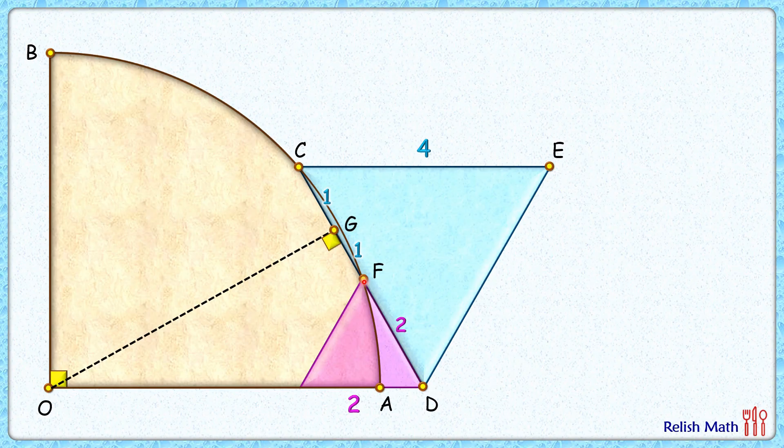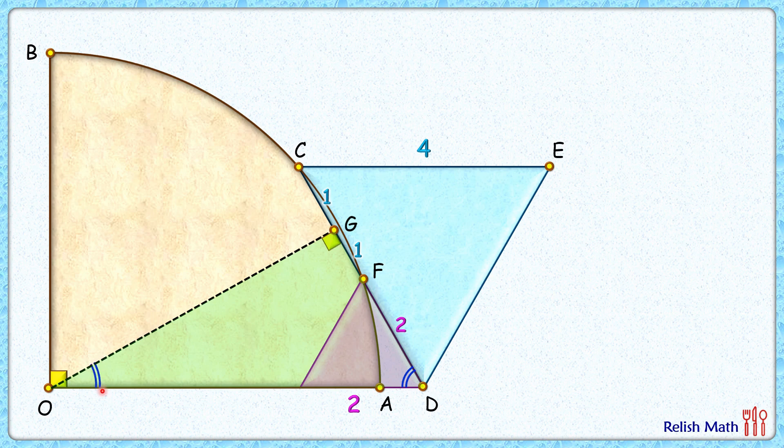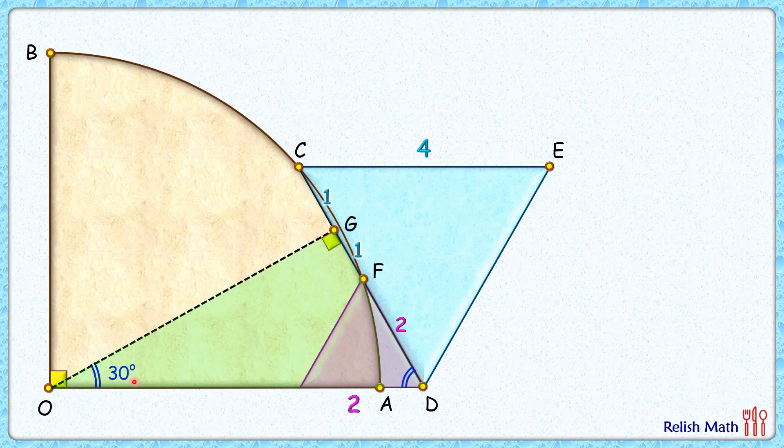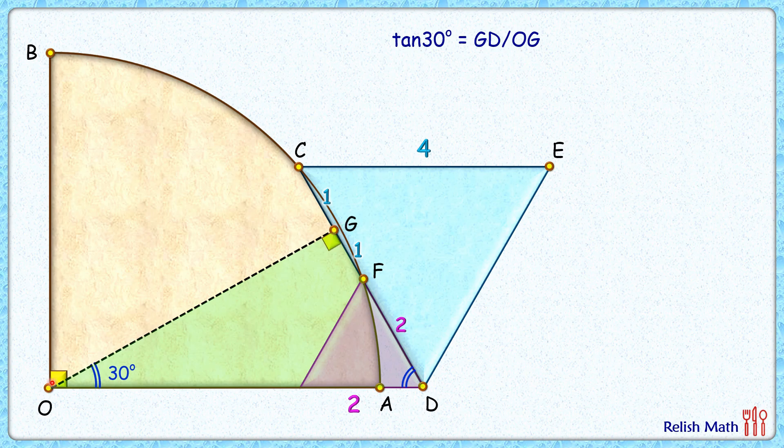Now if you look at this right angle triangle, this angle D is an angle of an equilateral triangle, so 60 degrees, and thus this angle O will be 30 degrees.